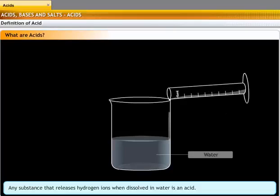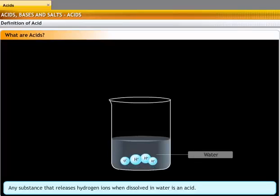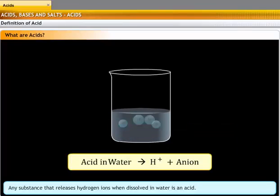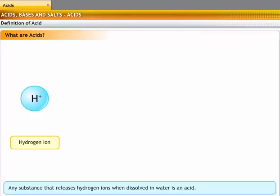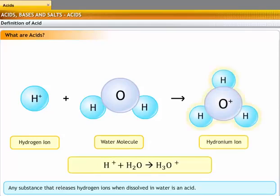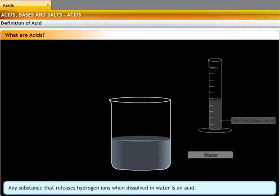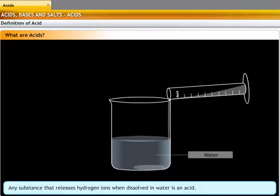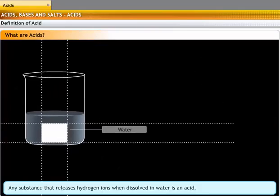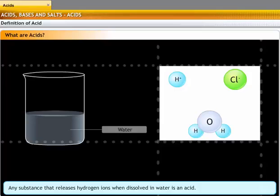Any substance that releases hydrogen ions when dissolved in water is an acid. A hydrogen ion cannot exist on its own, so it combines with a water molecule to form a hydronium ion. For example, hydrochloric acid when dissolved in water liberates a hydrogen ion and a chloride ion. The hydrogen ion combines with water to form a hydronium ion.